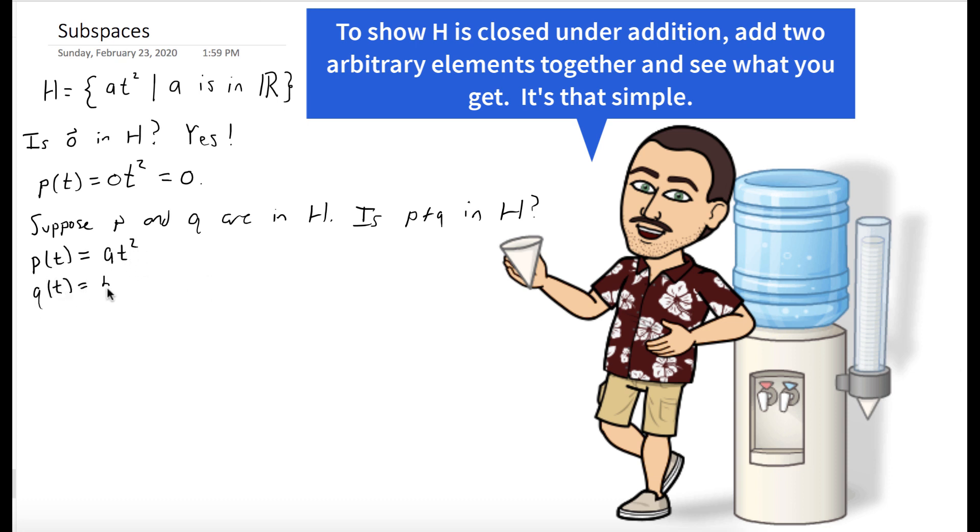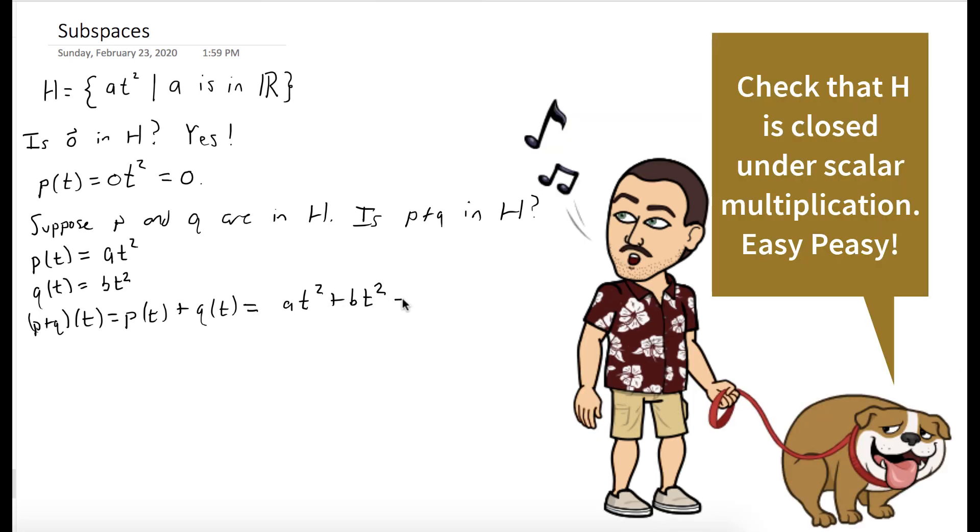So if p(t) = at² and q(t) = bt², their sum is at² + bt². We can factor out t²: (a + b)t². That's a real number times t², so it's in H.